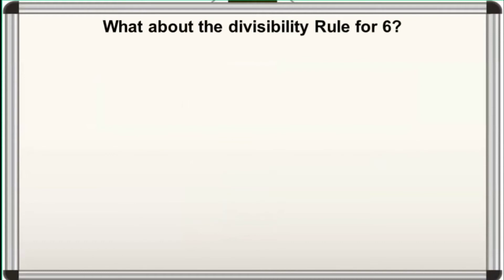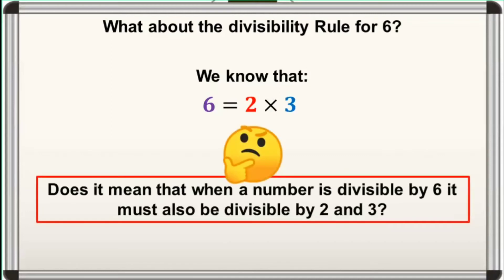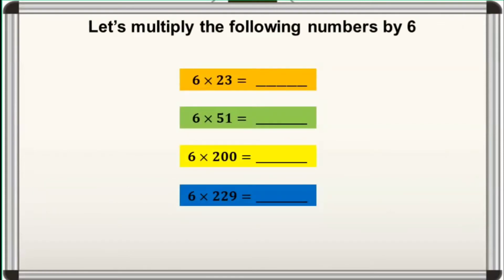Now, what about the divisibility rule for 6? What we just know is that 6 is equal to 2 times 3. Does it mean that when a number is divisible by 6, it must also be divisible by 2 and 3? We will explore on this. Multiply the following numbers by 6. Pause the video if you wish to have more time in answering. The answers to these multiplication problems are 138, 306, 1,200, and 1,374. Since 6 is one of the factors of these numbers, we say that they are also divisible by 6.